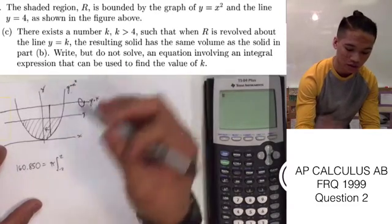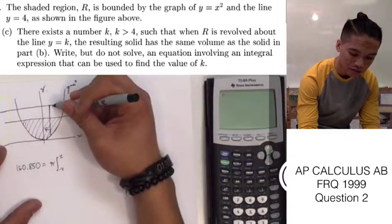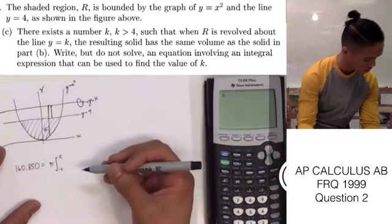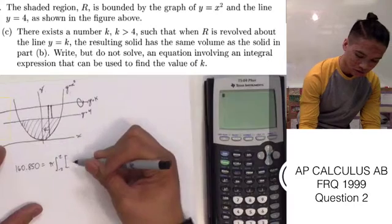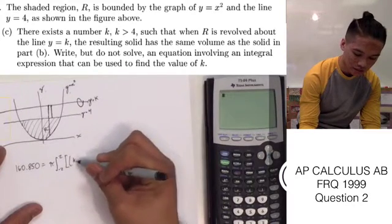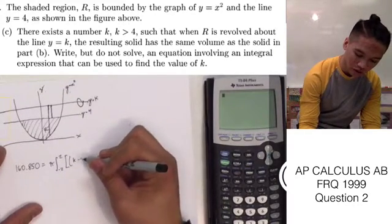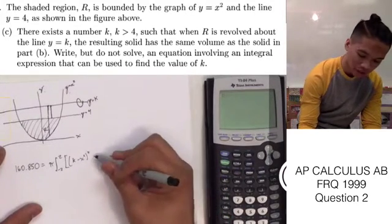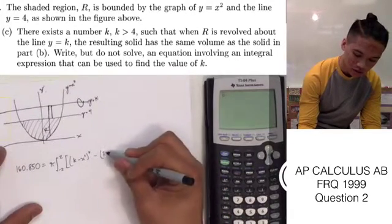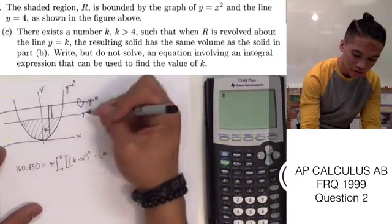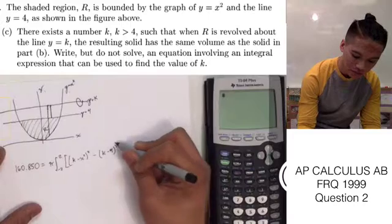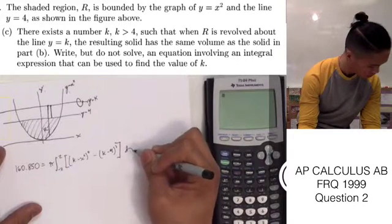And then our little r, the inner radius, is going to be from y equals k to y equals 4. So, what we do here is k minus our lower function squared minus k minus 4, since this is our inner radius. And then we have to square this dx.